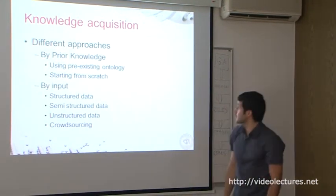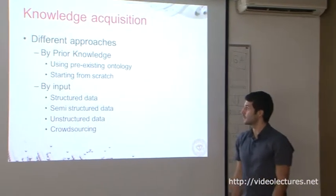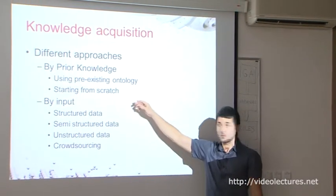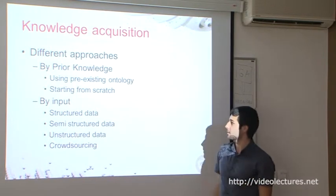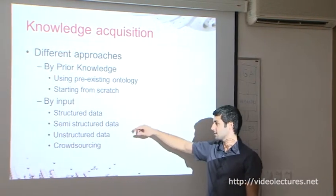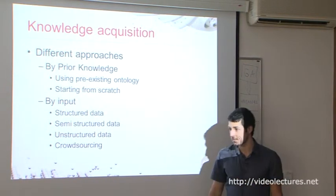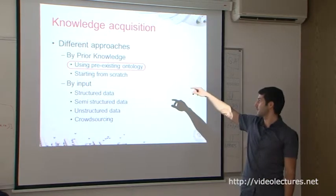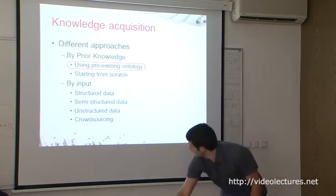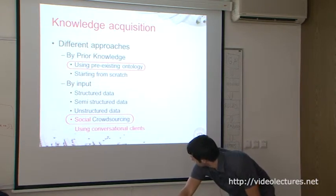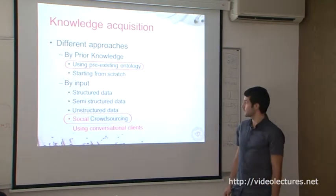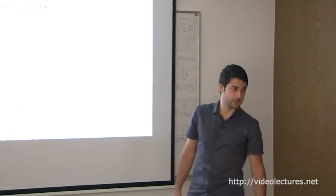We are actually using a preexisting ontology which we extend, and crowdsourcing which we extend to be social, using conversational clients. Basically you do the knowledge acquisition while talking to the application and doing other things — so if done right, you wouldn't even know you're actually teaching it in some cases. So this application I showed: basically the machine can ask a human a question. This blue line is usually done with some kind of natural language generation — the ontology gets converted to something a human can understand. Then the person can respond with predefined options — yes, no, and others.